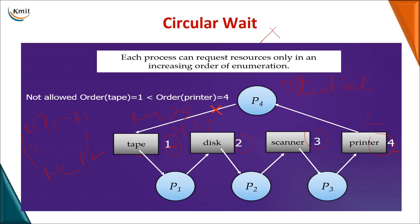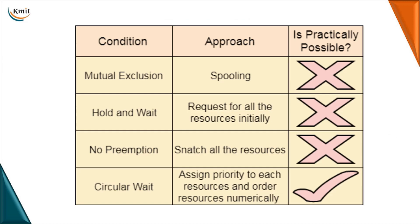In summary, these are the four conditions we can try to eliminate to prevent a deadlock. Practically, eliminating mutual exclusion is difficult because spooling doesn't work for all resources. Hold and wait is very hard to eliminate due to starvation and low resource utilization. Preemption wastes work done so far. Circular wait can be achieved by assigning numerical priorities to resources. At least one necessary condition must be made false to prevent a deadlock.